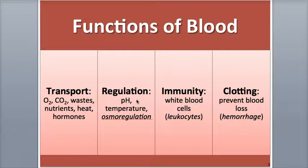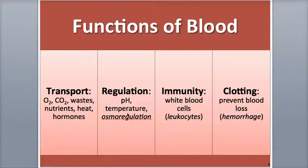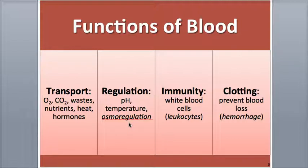Blood plays a major role in regulating homeostasis. It can help balance pH changes by using chemical buffers that weaken the pH of strong acids and bases. Because blood plasma is about 91.5% water, blood can regulate body temperature by absorbing, transporting, and releasing heat. Blood also plays a role in osmoregulation, balancing the water content of cells, by adjusting its concentration of dissolved ions and plasma proteins.